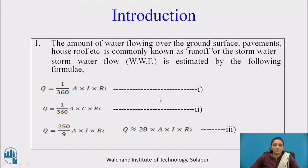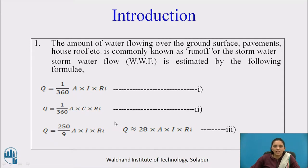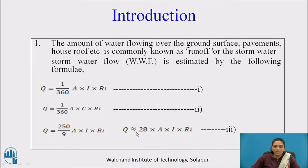There are two formulas. The first formula is Q = (1/360) × A_i × R_i. The second formula is Q = 28 × A_i × R_i. In general, Q = K × A_i × R_i, where K is a constant depending on the units. If K = 1/360, discharge is in m³/s, area in hectare, and R_i in mm/hour. If K = 28, discharge is in litres/second, area in hectare, and R_i (intensity of rainfall) in cm/hour.